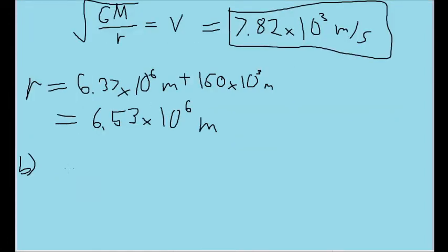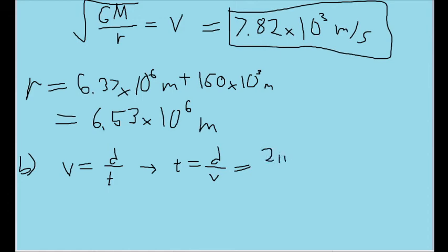Part B asks us to find the period of the orbit. The formula for period can be derived fairly simply from mechanics. Since linear speed equals distance divided by time, time equals distance divided by speed. In this case, the distance traveled in one period is the circumference of the circular orbit, which equals 2 times pi times the radius. So our formula for the period of orbit is 2 pi times the orbital radius divided by the speed.